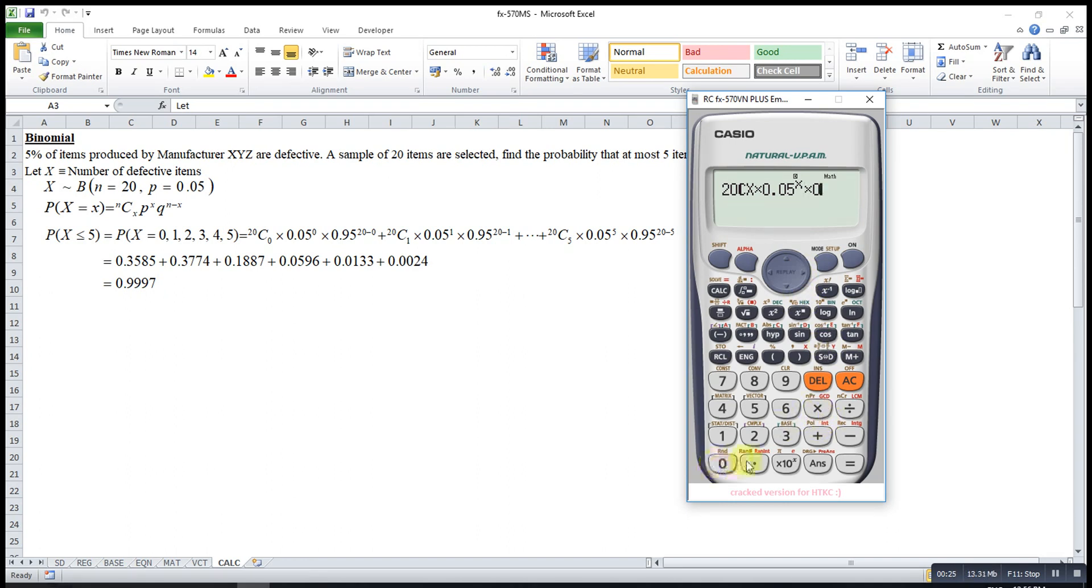then times 0.95 to the power of N minus X, 20 minus X. Then we press calculate.